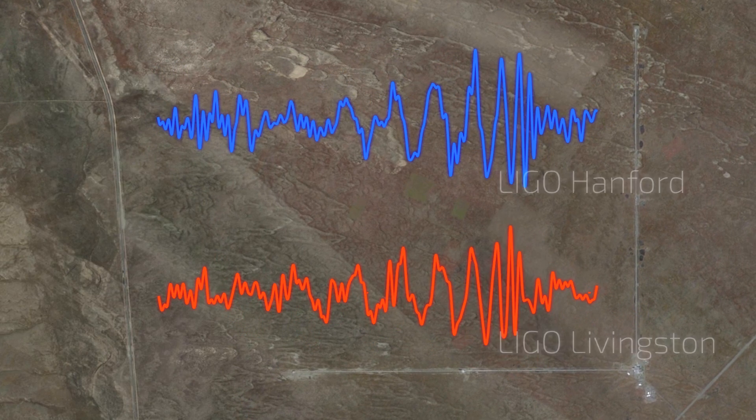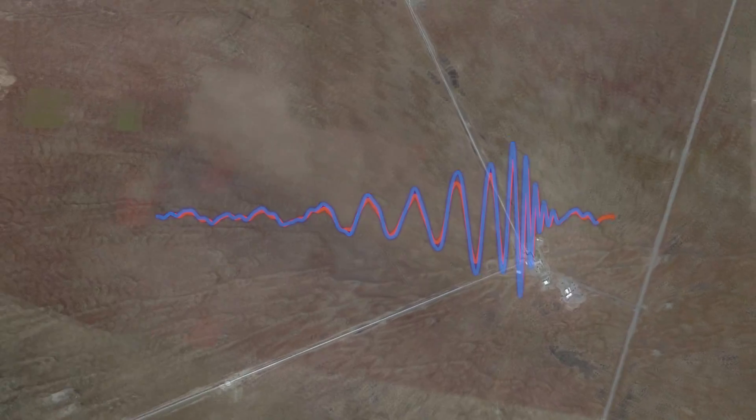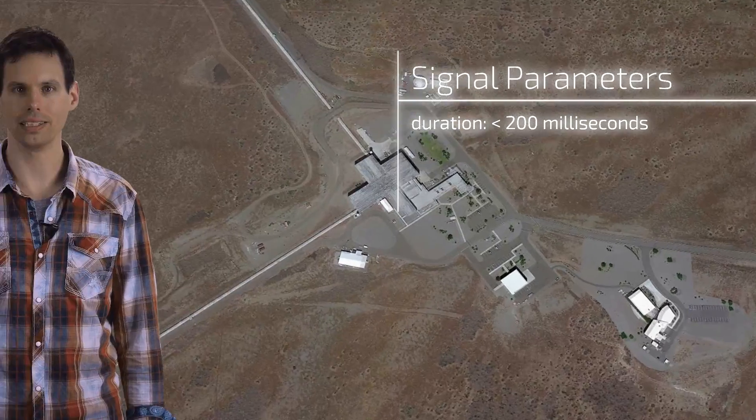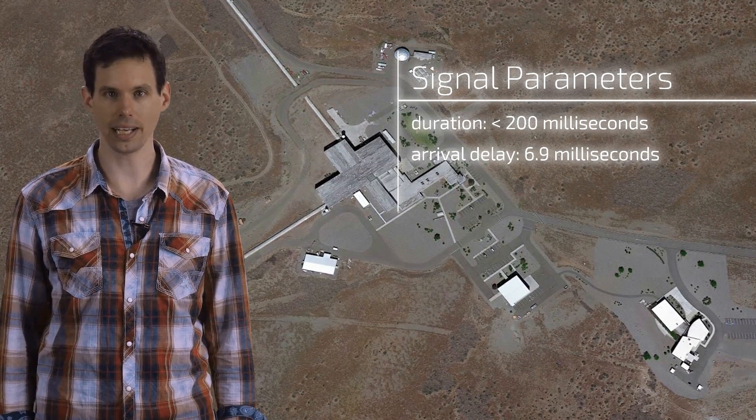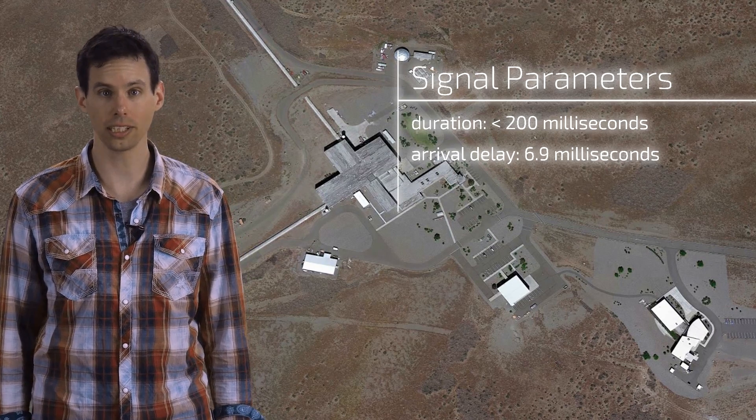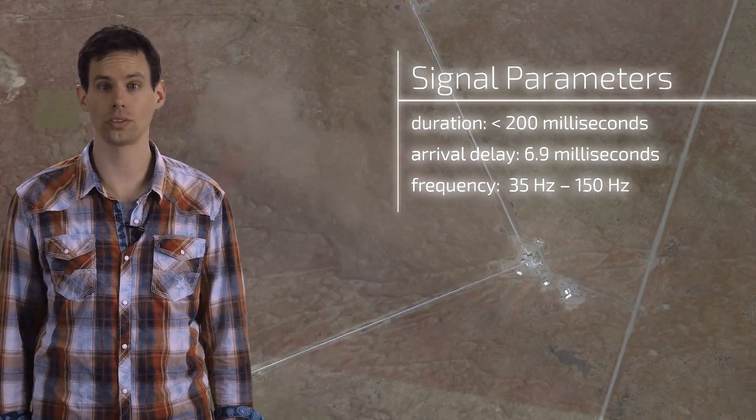Computer algorithms later separated their signal from instrumental noise. The gravitational wave signal lasted for some 100 milliseconds. It arrived at Livingston, Louisiana first and seven milliseconds later at Hanford, Washington State. The initial signal frequency was 35 Hz, which increased up to 150 Hz.